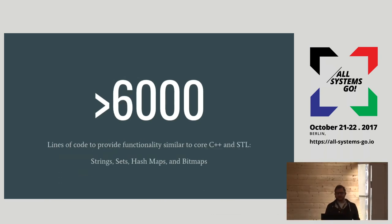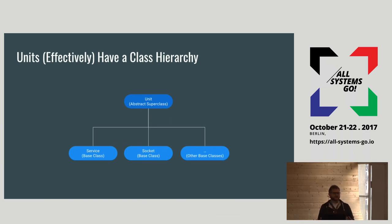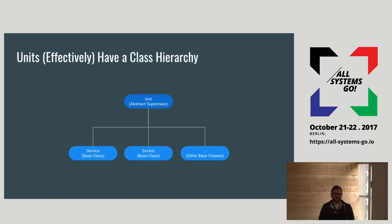We have over 6,000 lines of code providing functionality extremely similar to things that are part of the standard template library for C++. This includes strings, sets, hash maps, and bitmaps. Overall, we've dedicated an enormous amount of code to recreating C++-style functionality in the SystemD codebase. We even have our own attempt at a class hierarchy with things like units, where a unit is basically an abstract superclass, and services, sockets, and targets are concrete subclasses. These are implemented through a combination of structs, macros, and lookup vTables that map methods with different implementations for different unit types to the actual routine that runs them.